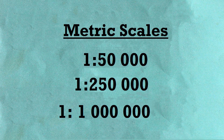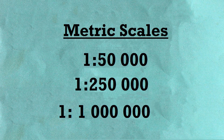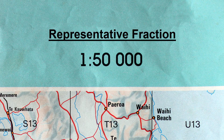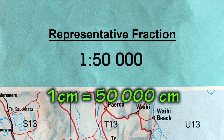Other countries scale their maps in metrics. Representative fractions such as 1 to 50,000, 1 to 250,000, and 1 to 1 million are commonly used. For example, on a map with a scale of 1 to 50,000, one centimeter equals 50,000 centimeters in reality.